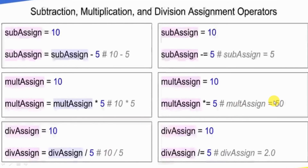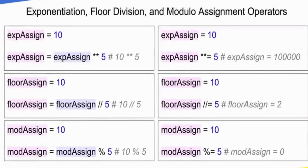This is the division assignment operator. Next is exponentiation, floor division, and modulo assignment. For the exponentiation symbol, we use double-star. x-assign equals 10, then x-assign star-star-equals 5. The x-assign value is 10 power 5, which is 1 lakh (100,000). For floor assignment: floor-assign equals 10, then floor-assign double-slash-equals 5, giving floor-assign a value of 2. Next is mod-assign: 10 mod 5 equals 0, so the mod-assign value is 0.